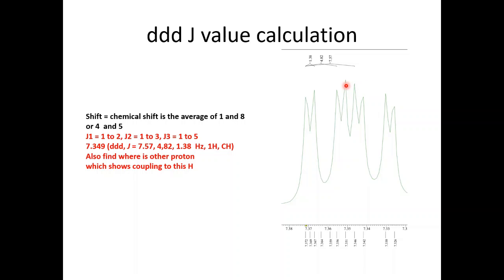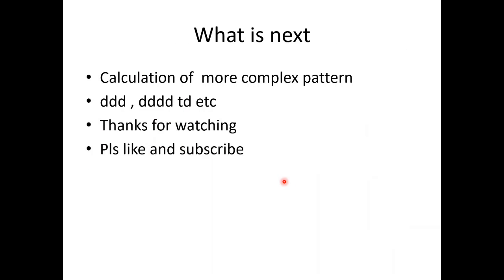Or you can take center peaks 4 and 5, click on this and click on this, add these and divide by 2, and average of these two peaks report the chemical shift.